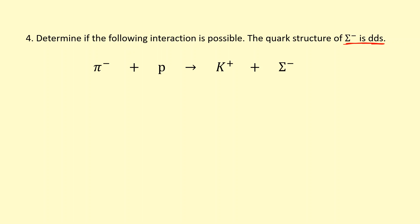Determine if this interaction is possible: a pi minus interacting with a proton turning into a K plus and a sigma minus. The quark structure of the sigma minus is down-down-strange, as given. The pi minus is a meson, not a baryon; the proton is a baryon with positive charge. The K plus has a quark structure of up-strange-bar, giving it a strangeness of plus one. The sigma minus contains a strange quark and is a baryon, giving it a strangeness of minus one.